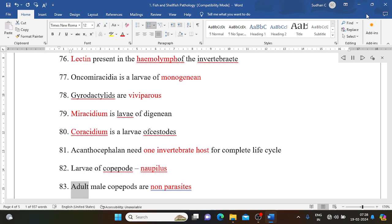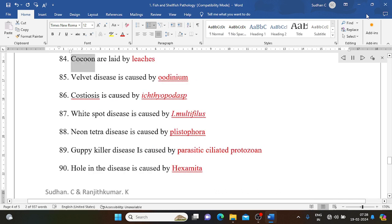Adult male copepods are non-parasites. Cocoons are laid by leeches. Velvet disease is caused by Oodinium. Costiosis is caused by Ichthyobodo sp. White spot disease is caused by Ichthyophthirius multifiliis. Neon tetra disease is caused by Pleistophora. Guppy killer disease is caused by parasitic ciliated protozoan. Hole-in-the-head disease is caused by Hexamita.